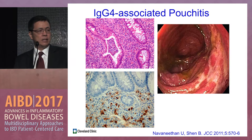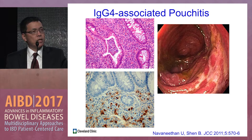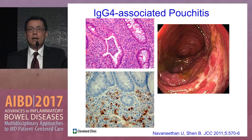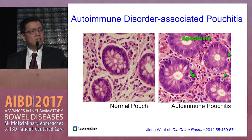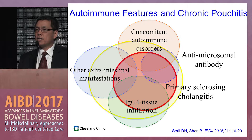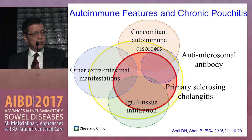In patients with refractory pouchitis, request IgG4 staining from the pathologist. If the mucosa is loaded with IgG4-expressing plasma cells, those patients may benefit from steroid therapy rather than antibiotic therapy. Some patients show a GVHD-like pattern with excessive apoptotic bodies on mucosal biopsy; they may also benefit from anti-inflammatory or immunosuppressive medications. Overlapping features include extra-intestinal manifestations, PSC, IgG4, anti-microsomal antibody, or ANA positivity, or concurrent autoimmune disorders — these are labeled immune-mediated disorders.